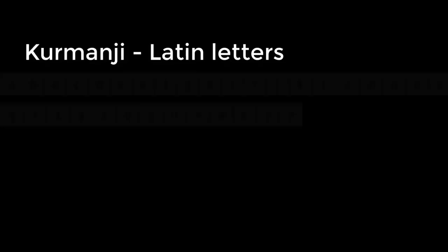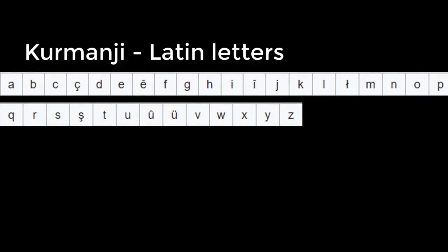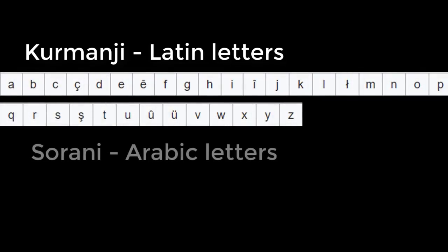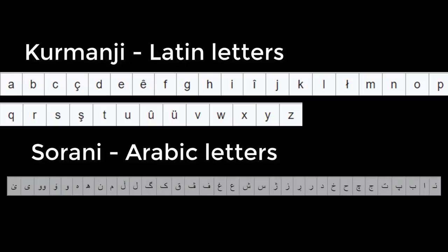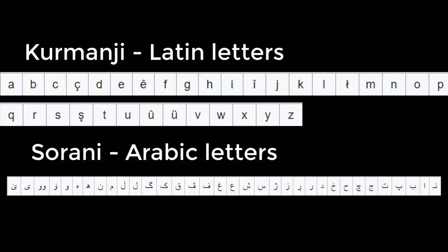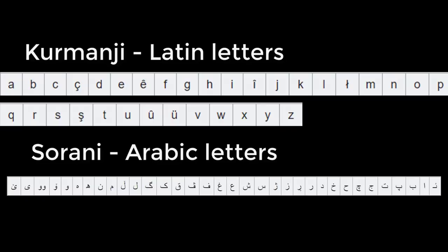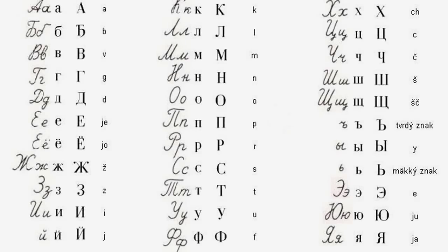If we look at the Kurdish alphabet, we see this separation very clearly. The Kurmanji dialect is written with Latin letters, while Sorani is written with an Arabic-style alphabet. There is also a group of Kurds using the Kurulik alphabet. This means the Kurdish language is divided between three different alphabets, all of which developed depending on where you live as a Kurd.